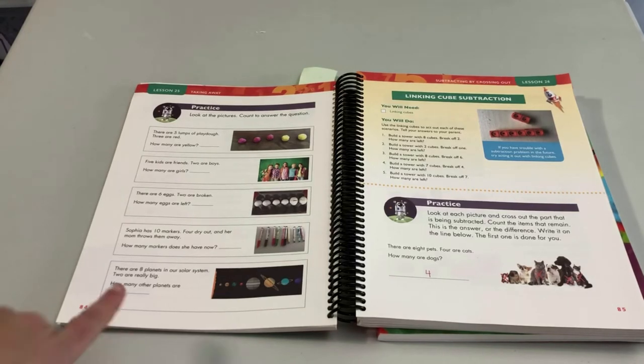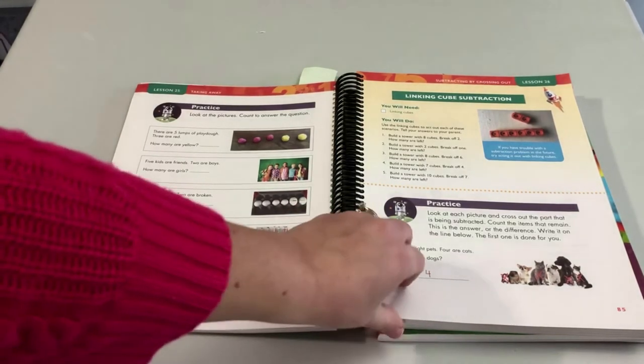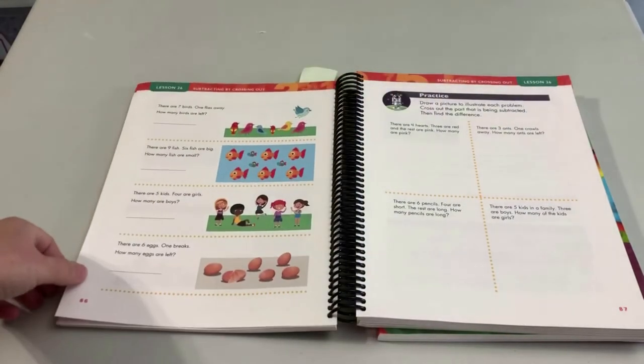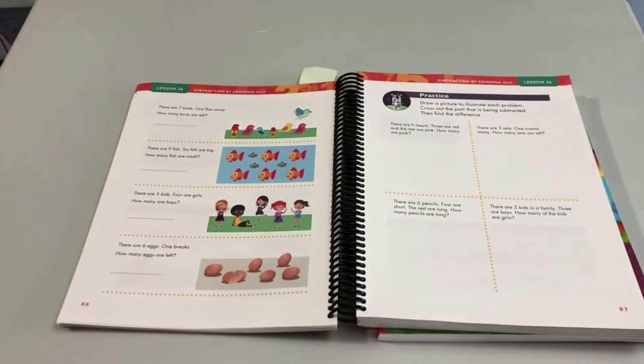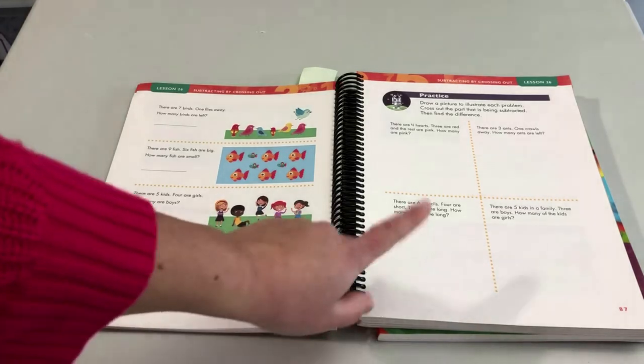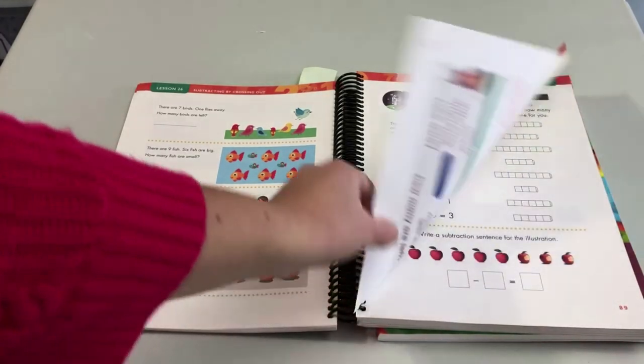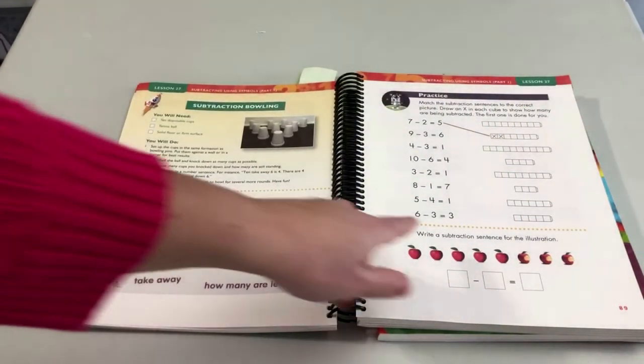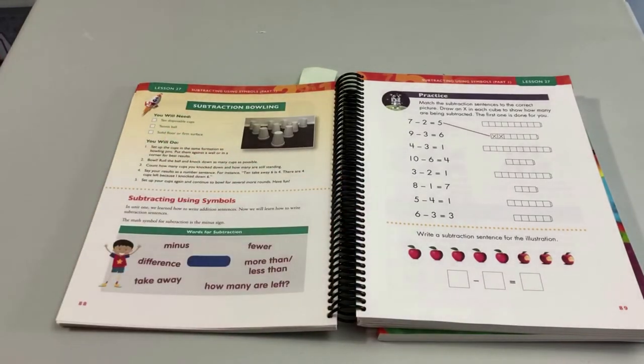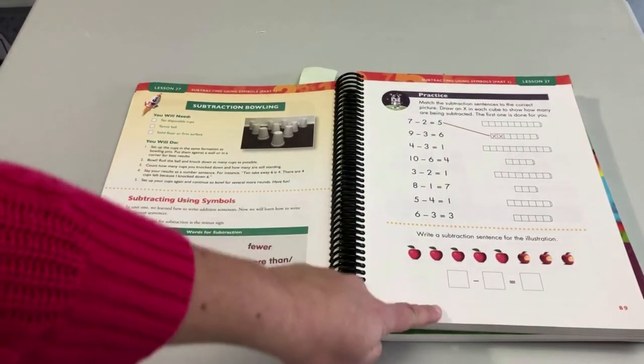But then we start to move to pictorial where they can see a picture of what's happening. In some cases, they are crossing out parts of the picture and counting what's left, or drawing a picture and then crossing out part. You can see I'm starting to introduce the abstraction where they might have a picture and write a number sentence, or here's a number sentence and they have to connect it to a picture.